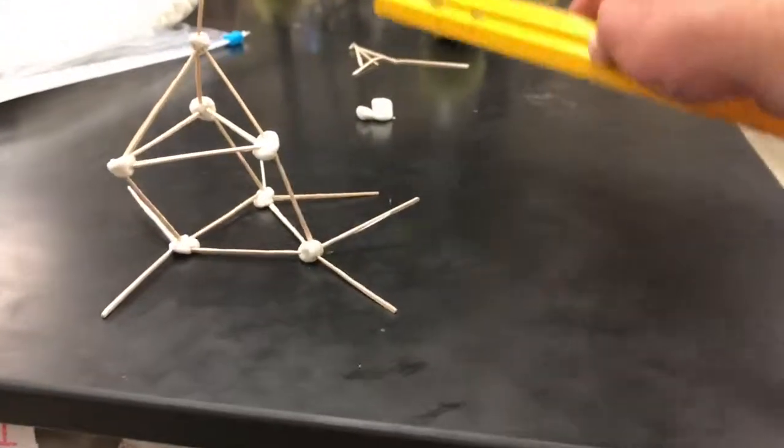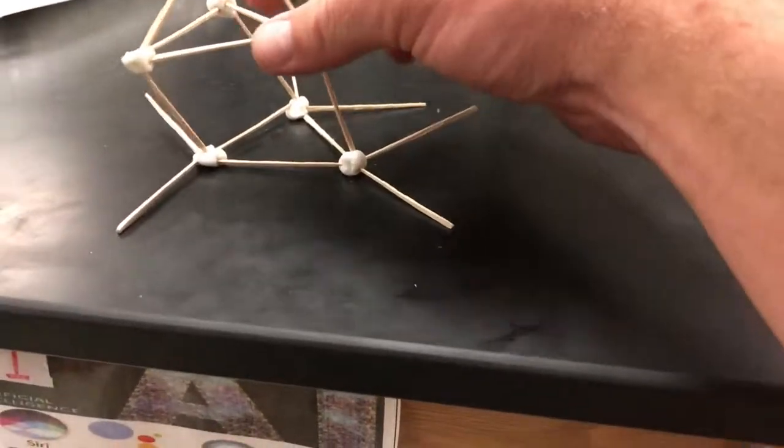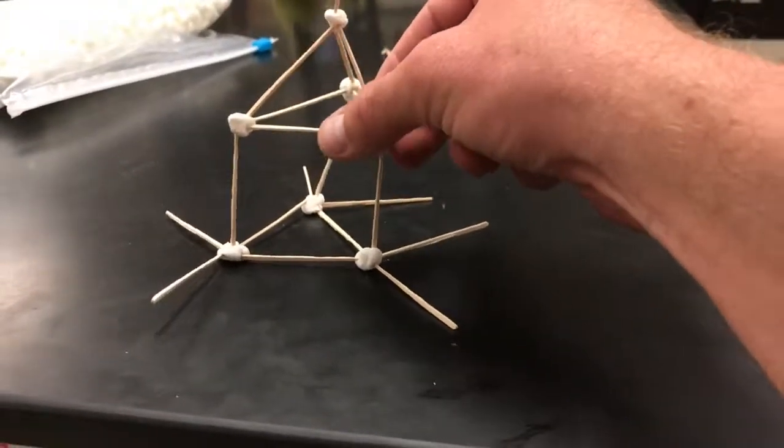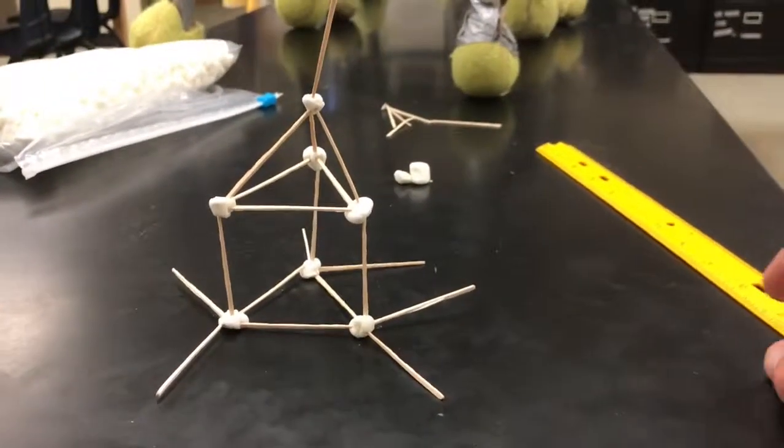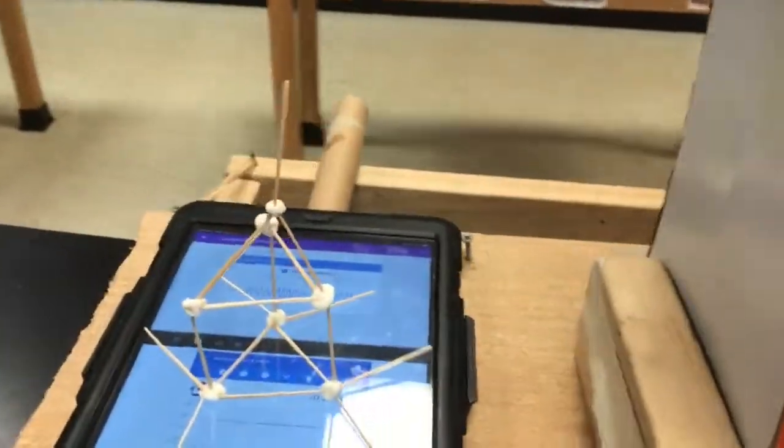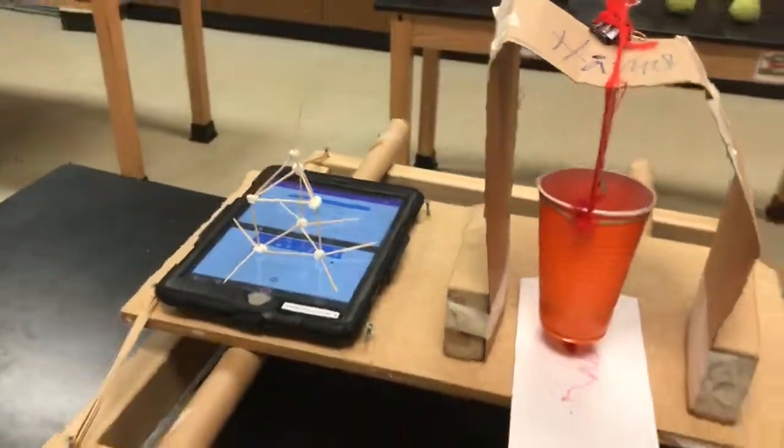Five marshmallows and 20 toothpicks. Uh-oh. You do need to build it at your own table and then transport it over to the testing station. And it may not stick to the table. And it wasn't too bad moving it over to the shake table here.